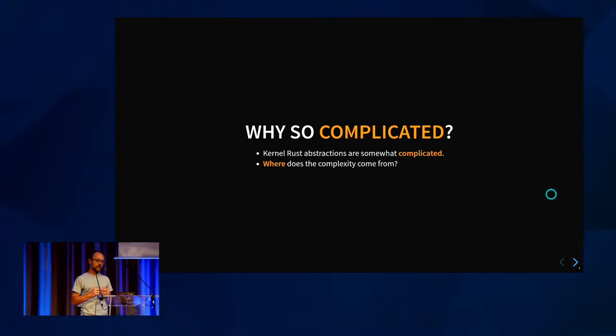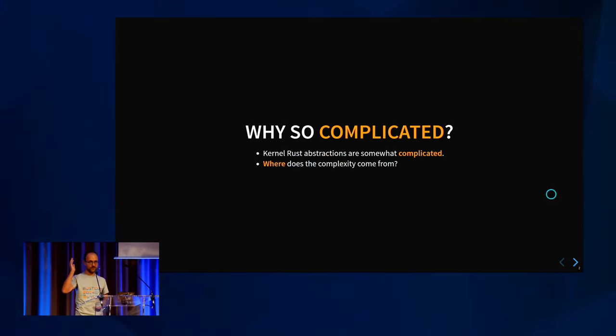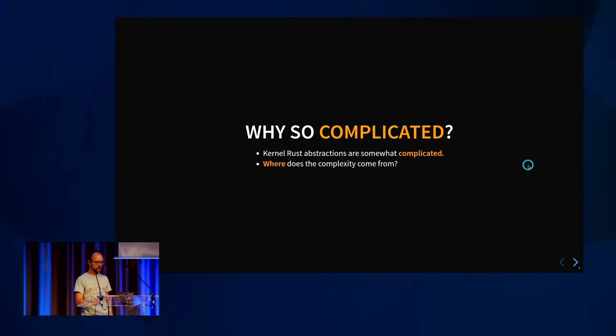A question I get a lot is: why is it so complicated? People see things they do in C in four or five lines, and then they see the abstractions that enable users to use the C APIs from Rust — and they're like, it's 75 lines to do the same thing. Why is it 75 lines of weird pointy brackets? That's what I'm going to try to explain today — where this complexity comes from and why we need it, unfortunately.